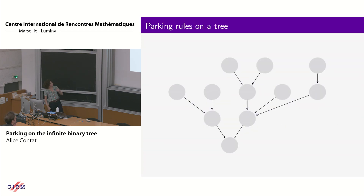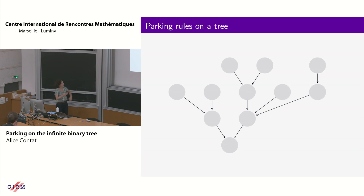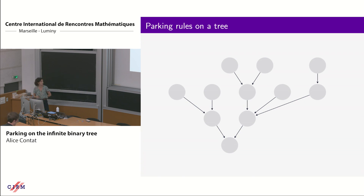So the tree will be random later, but let us start with a fixed tree. It has vertices between the edges and a root — this is a rooted tree, with the root at the bottom and all edges oriented toward the root. This is my parking lot: each vertex represents one parking spot that can accommodate at most one car.